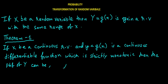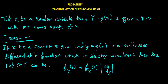So we write f of Y, small y, equals f of x, small x, times the modulus of dx over dy. This modulus of dx/dy part right here is the main thing in the formula.